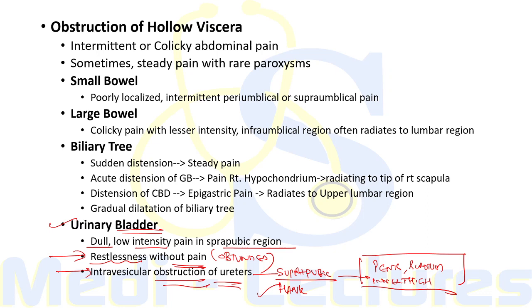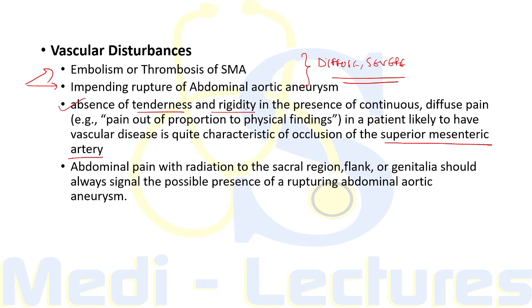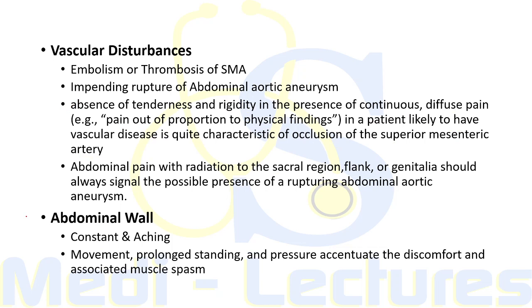Vascular disturbances — such as embolism or thrombosis of the superior mesenteric artery or impending rupture of an abdominal aortic aneurysm — can be associated with diffuse and severe abdominal pain. In occlusion of the superior mesenteric artery, there is absence of tenderness and rigidity, with continuous diffuse pain out of proportion to physical findings; patients usually have a history of vascular disease. Abdominal pain with radiation to the sacral region, flank, or genitalia should always signal the possible presence of a rupturing abdominal aortic aneurysm.